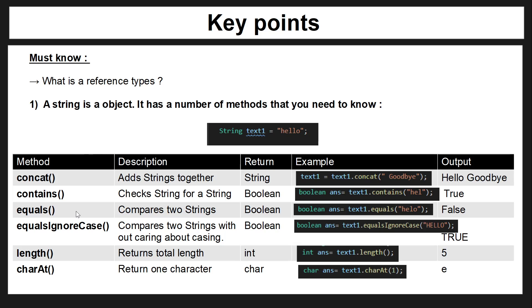The equals method is probably one of the more important methods you need to know. It compares two strings — or compares a variable string with another variable string. In a previous video we saw how using the double equals isn't a good way of checking if one string equals another, so the equals method allows us to check this in a much more efficient way. If text1 equals the string in the brackets it returns true, otherwise it returns false. You can also use equalsIgnoreCase, which does the same thing except it doesn't pay attention to upper or lower case.